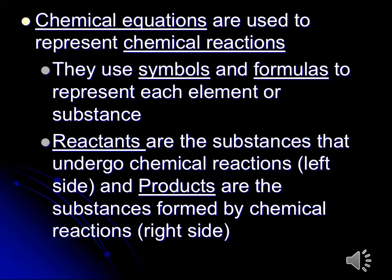Chemical equations are used to represent chemical reactions. They use symbols and formulas to represent each element or substance. The reactants are the substances that undergo chemical reactions — on the left side most of the time. The products are the substances formed by the chemical reactions — on the right side most of the time.